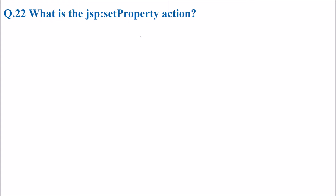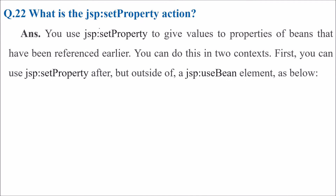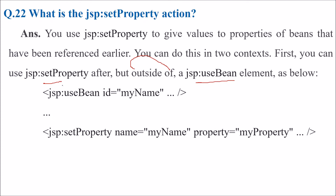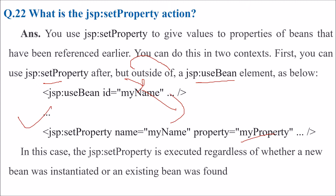What is the JSP setProperty action? We use JSP setProperty to give values to the properties of beans that have been referenced earlier. You can do this in two contexts. First, you can use JSP setProperty after, but outside of, the JSP useBean element. In this case, the JSP setProperty is executed regardless of whether a new bean was instantiated or an existing bean was found.